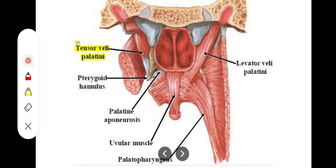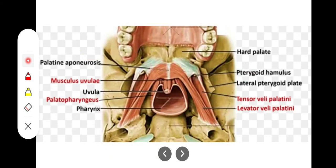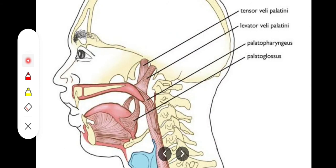The next muscle is the palatoglossus muscle. Two folds are formed — the palatoglossal fold and the palatopharyngeal fold — on the back of the mouth. The palatoglossus muscle originates from the oral surface of the palatine aponeurosis and descends in the form of an arch — the palatoglossal arch — along with the mucous membrane. It then inserts onto the side of the tongue.